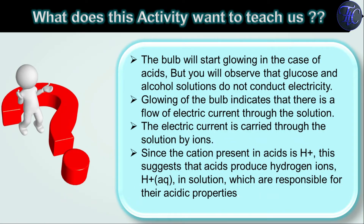Glowing of the bulb indicates that there is a flow of electric current through the solution, and the electric current is carried through solutions by ions. Glucose and alcohol do not conduct electricity. Since the cation present in acids is H⁺ (cations means positive ions), this suggests that acids produce hydrogen ions H⁺ in solution, which are responsible for the acidic property. In HCl, the bulb glows because H⁺ ions and Cl⁻ ions are present.